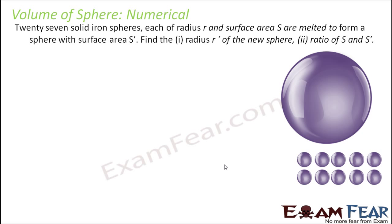27 solid spheres, each of radius r and surface area s, are melted to form a big sphere with surface area s′ and radius r′. We need to find the radius r′ for the new sphere.